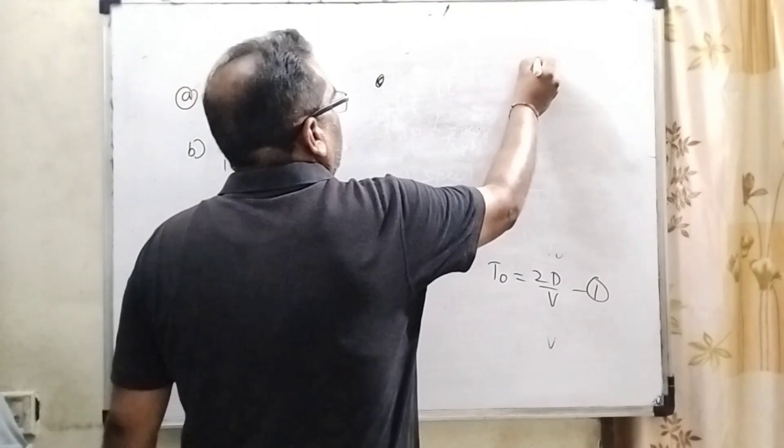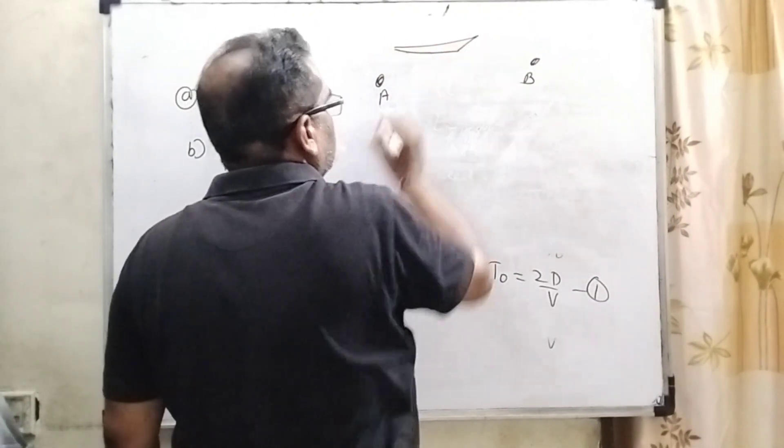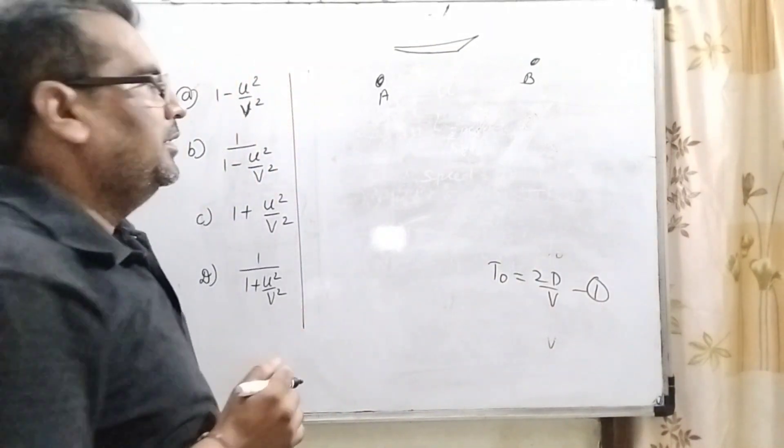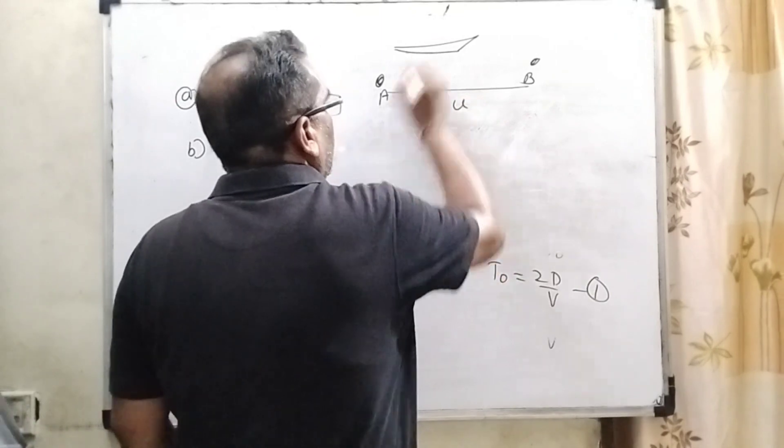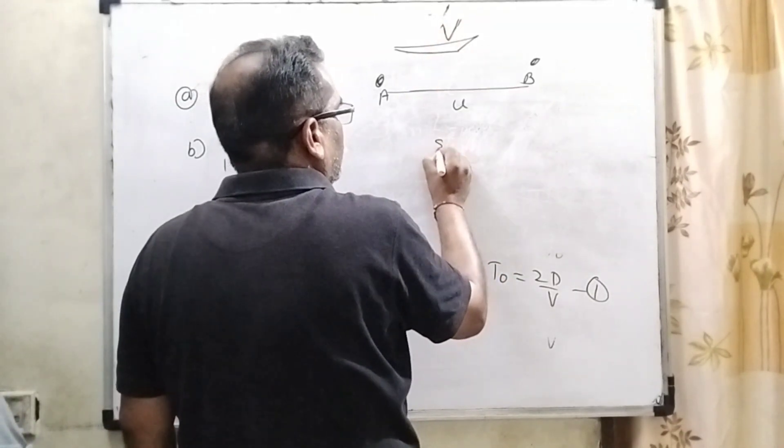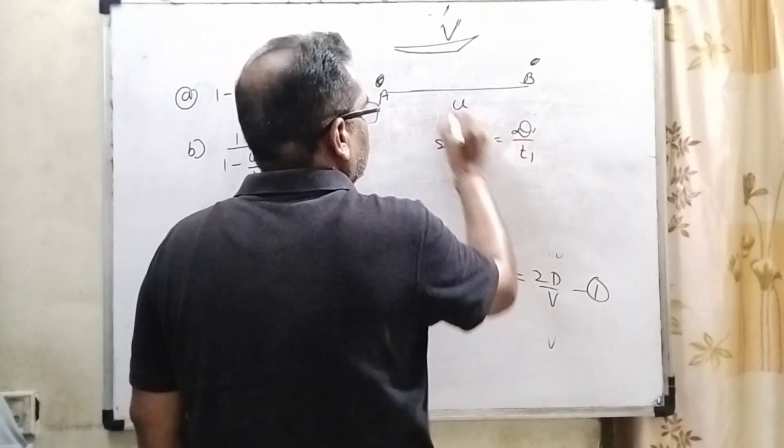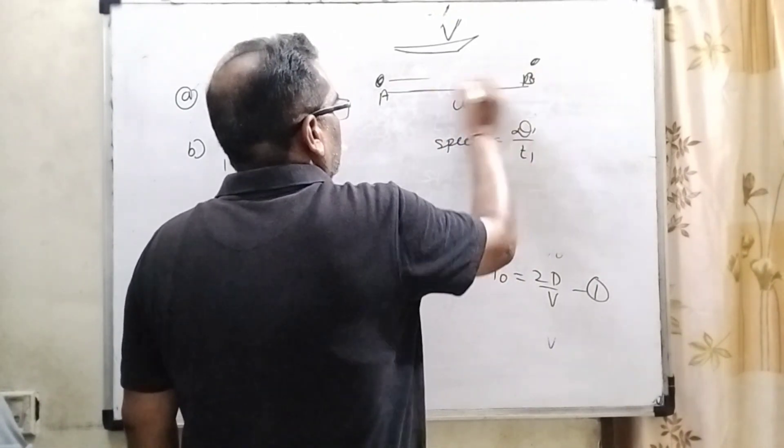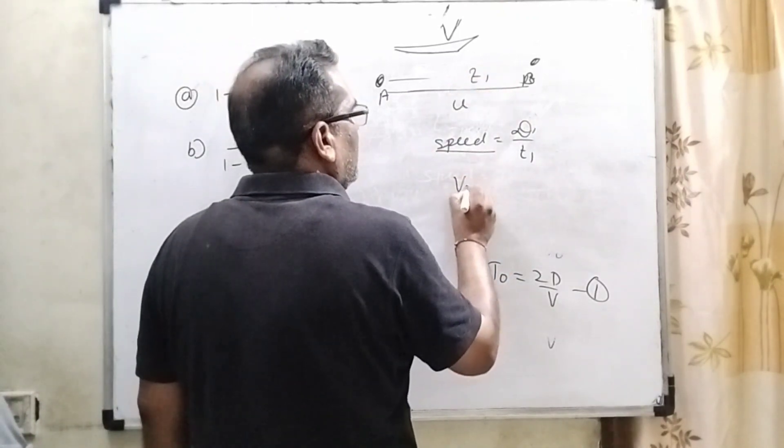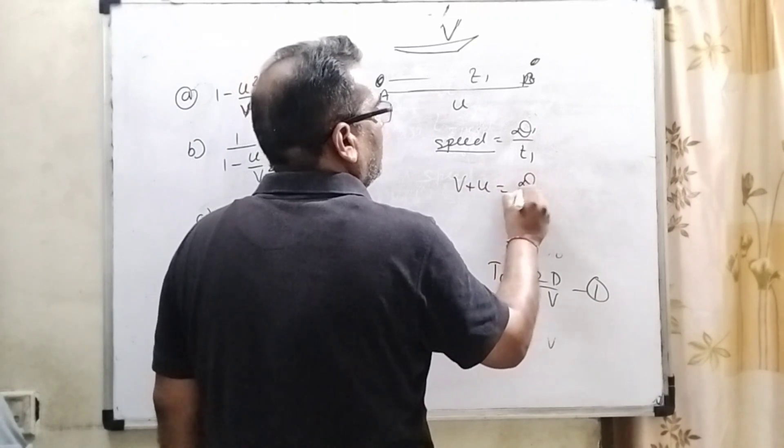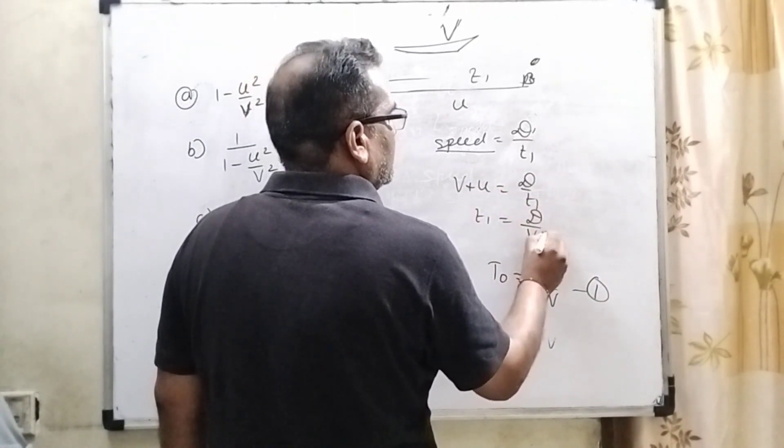Now, in second condition, when boat is traveling along with the stream means downstream. Then suppose its velocity is given that is U and its velocity is already given capital V. So here speed equal to distance upon time. Let us consider the reaching to A to B that is time taken is T1. Here speed that is V plus U equal to D by T1. Then T1 equal to D by V plus U.